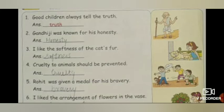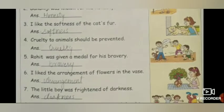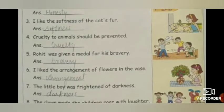Fourth: Cruelty to animals should be prevented. The answer is 'cruelty'. Fifth: Rohit was given a medal for his bravery. Rohit ko uski bahaduri ke liye medal mila. So 'bravery' is called abstract noun.